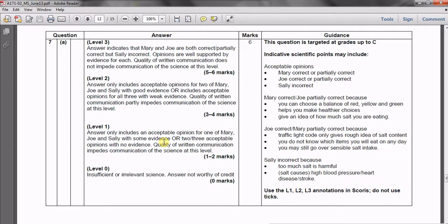And for level two, so three or four marks, you need to include opinions of two people. So either Mary and Joe or Joe and Sally or Mary and Sally. So two of the three. And again, you need to have some information backing it up. Or you could include acceptable opinions for all three, but the evidence that you've chosen is quite weak. So you might have commented on all three, but just not very well.